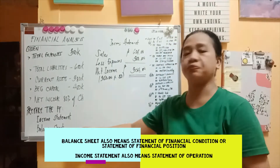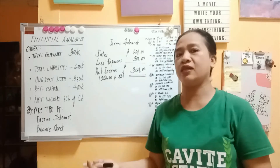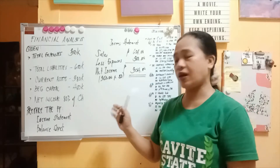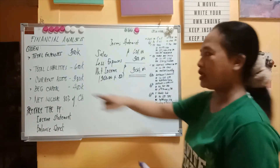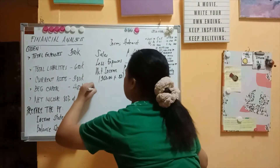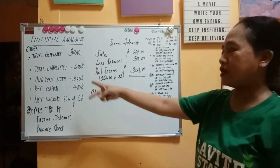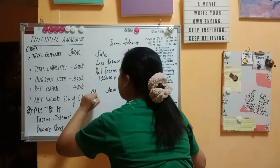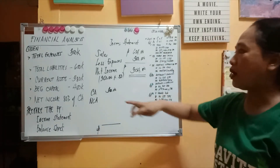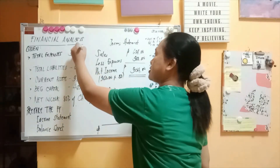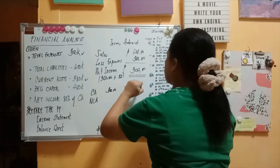Now for the balance sheet. We know that assets equal liabilities plus capital, so we need to balance the asset side against liabilities and capital. The only asset given is current assets, so we put current assets equal to 380,000. There is no non-current asset listed yet, so we leave it blank. Total liabilities are 600,000.